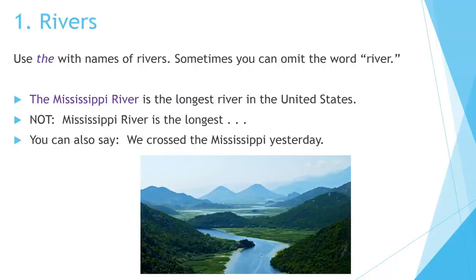Number 1: Rivers. Use THE with names of rivers. Sometimes you can omit the word RIVER. The Mississippi River is the longest river in the United States — not Mississippi River is the longest river. You can also say we crossed the Mississippi yesterday.